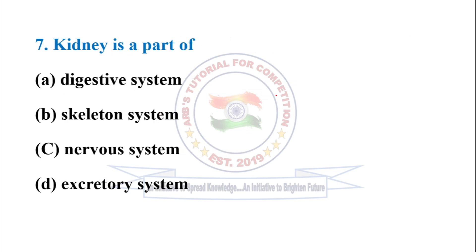Question seven: kidney is a part of? Kidney is a part of the secretory system, so option D is correct. Remember, the secretory system removes excess and unnecessary materials from the body fluids.